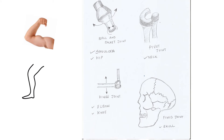Bones cannot bend. So how are you able to bend? Because we don't have a single long bone in our body — we have several bones that are joined together. For example, let us take our elbow. We have an upper arm and lower arm that are joined at our elbow region. Similarly, at the knee, the upper limb and lower limb are joined together. The elbow joint and the knee joint are called hinge joints.